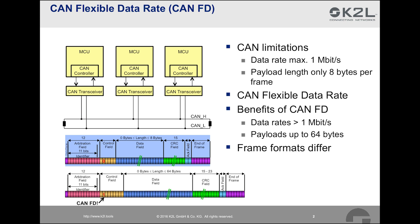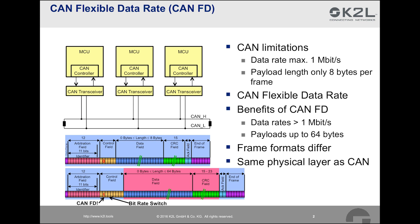This is achieved through a different frame structure, and by allowing switching to a higher bitrate during the transmission of payload and CRC, as indicated by the red background. The physical layer, however, remains the same, which allows CAN and CAN-FD frames to transmit over the same network. However, for CAN-FD communication, suitable transceivers and controllers are required.